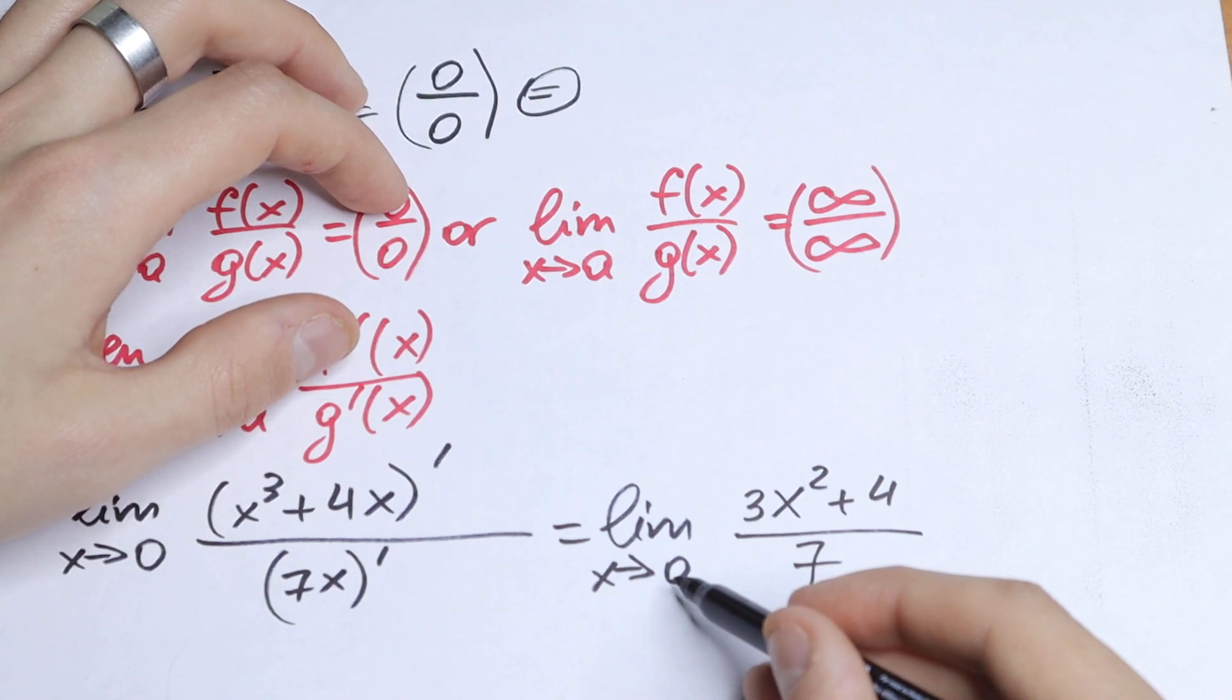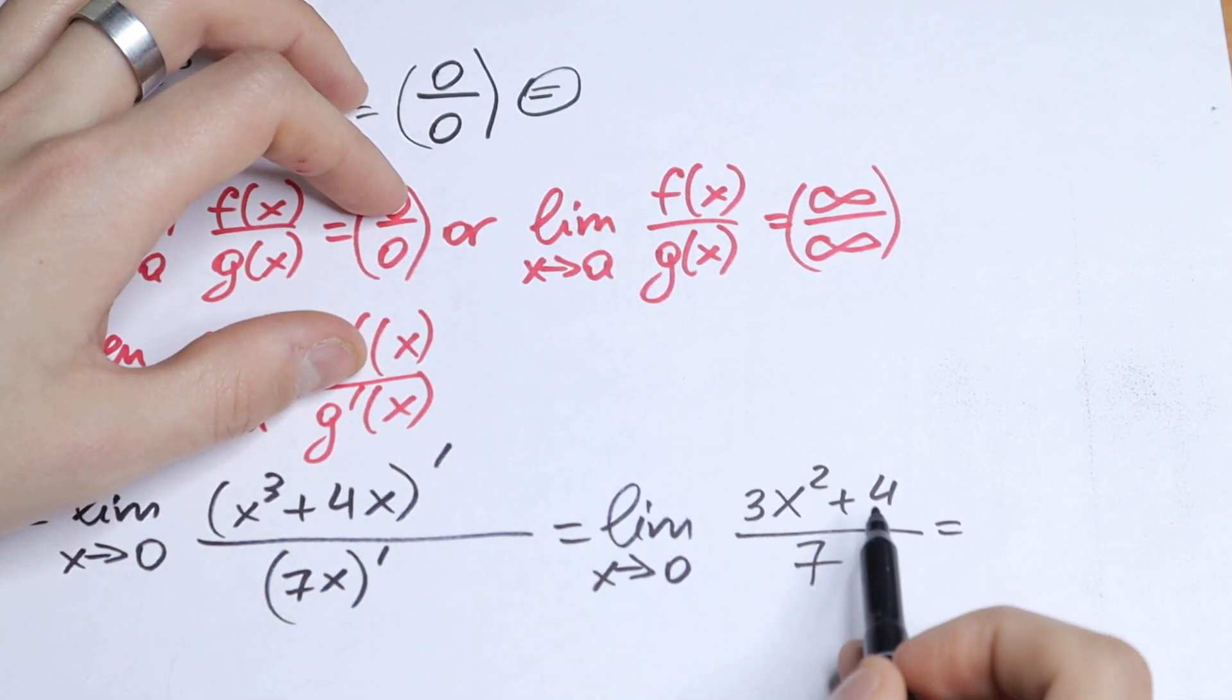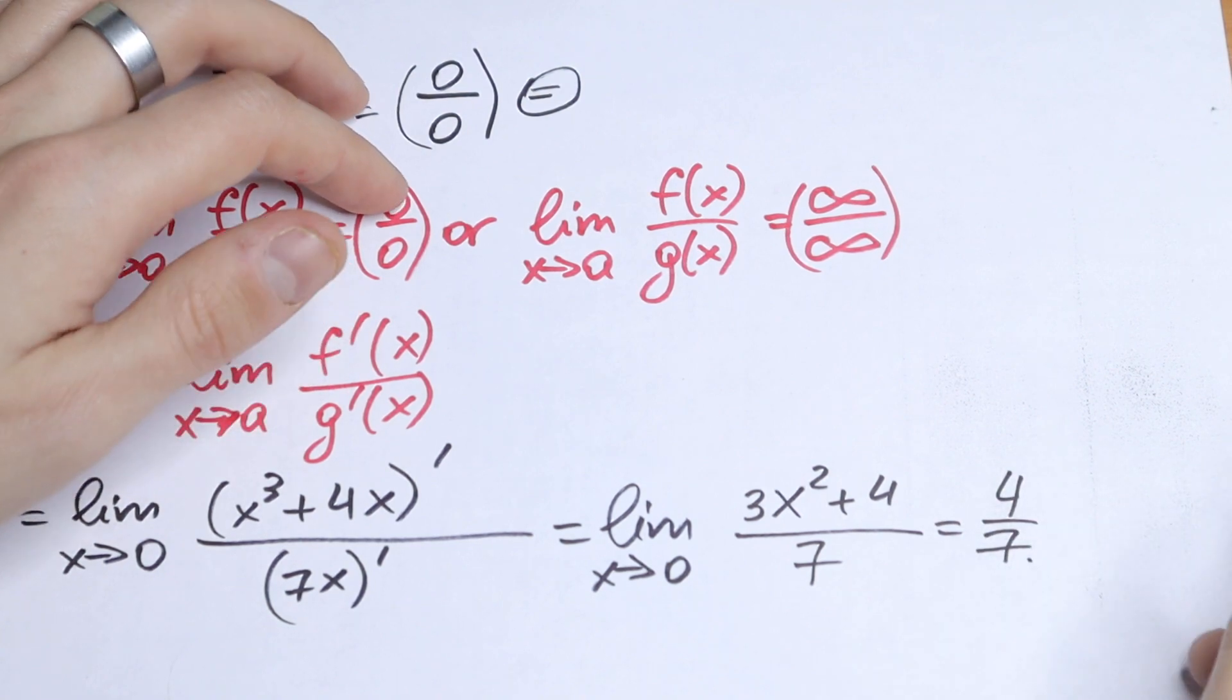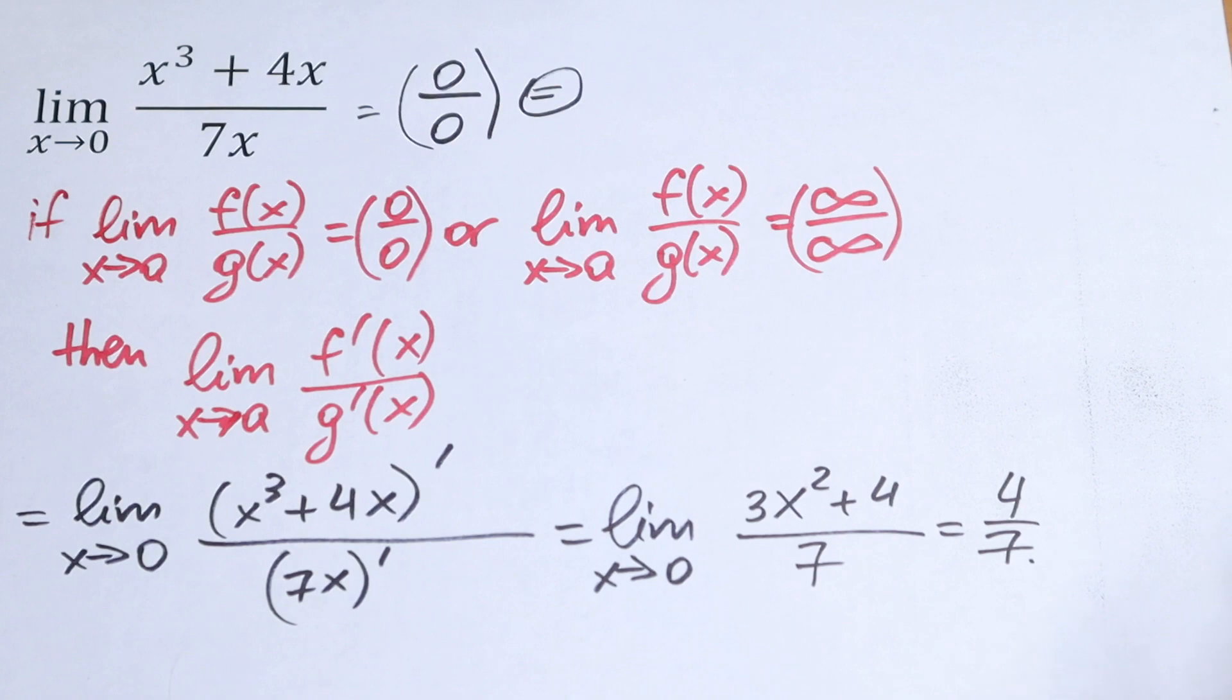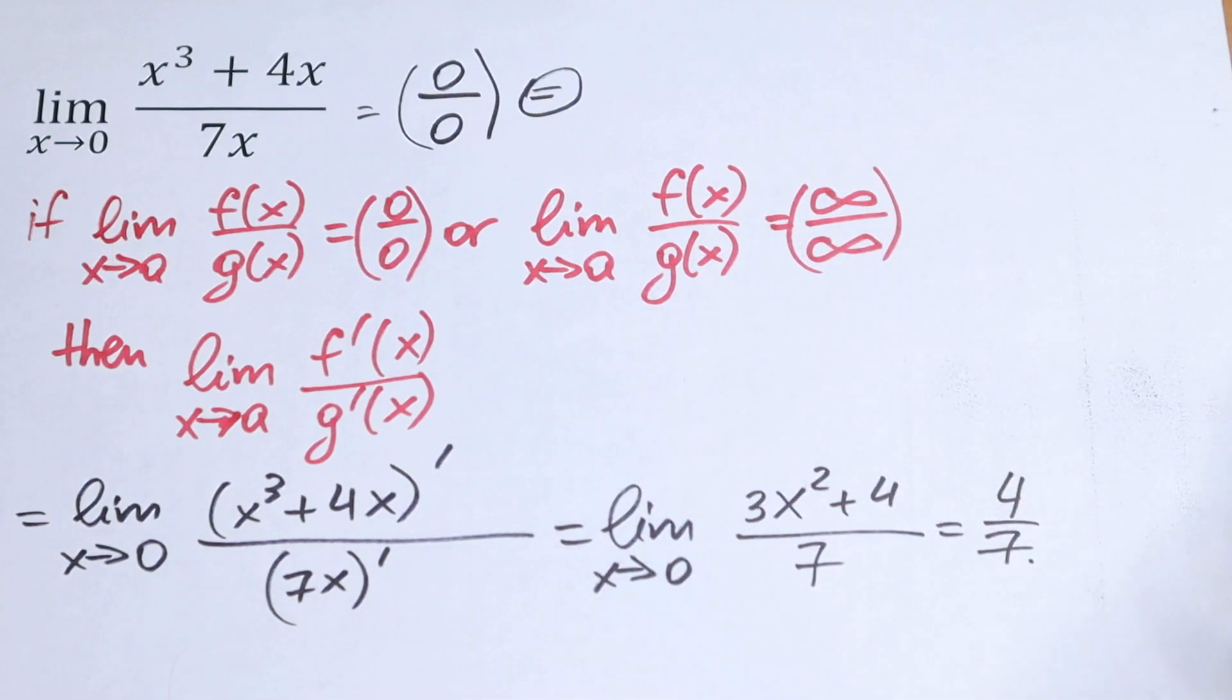Take a look. If we plug in 0, what we will have? 0 right here, but we will have 4 over 7, and this is our answer. As you can see, we don't have any undefined expression. We don't have 0 over 0, infinity over infinity, or 1 to the power of infinity. So we know the value it represents: 4 over 7.